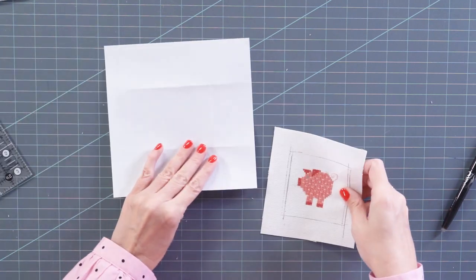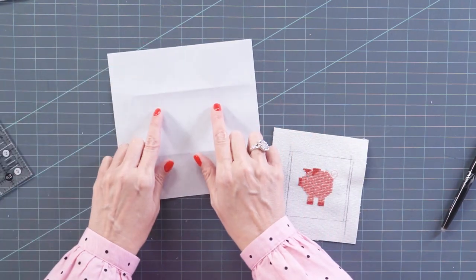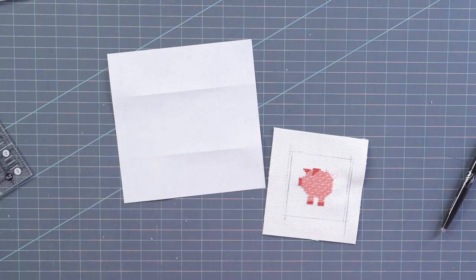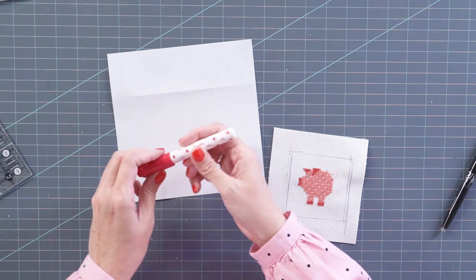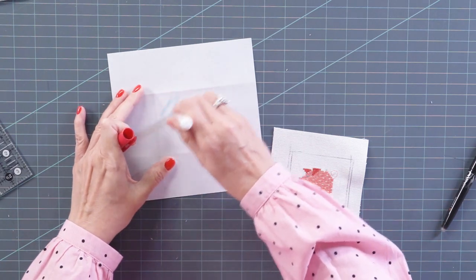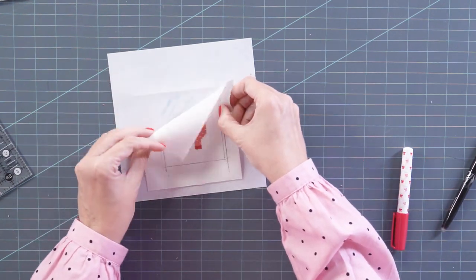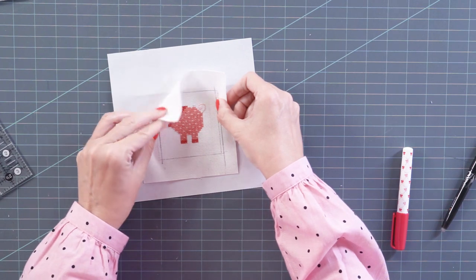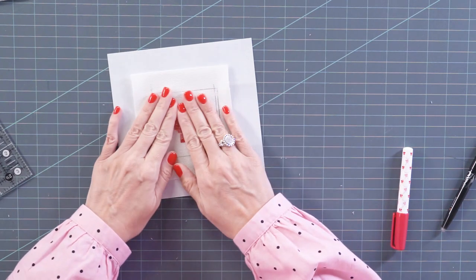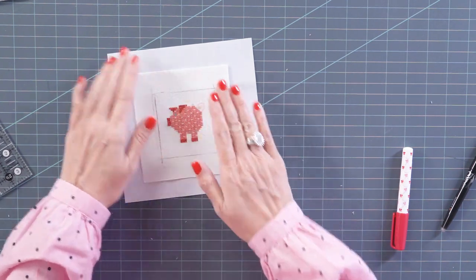Then we're gonna take our paper, which we have creased, so we know where our creases are. I like to use the sew line glue pen. I'm just gonna glue a little bit down. I'm gonna place the lines that we just did on here, just like that.